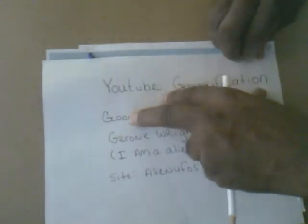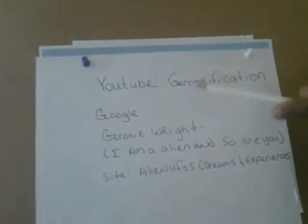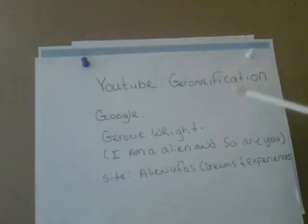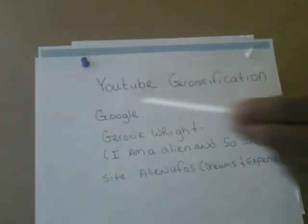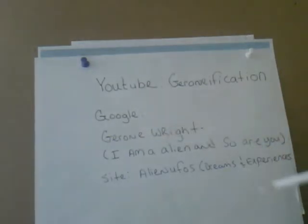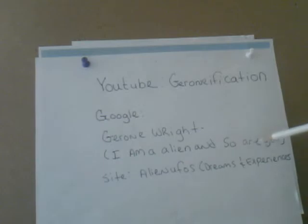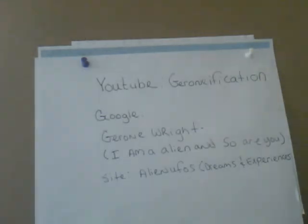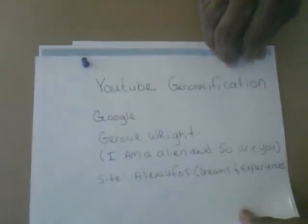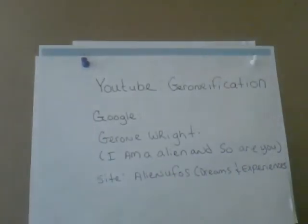You can find me here on YouTube under Geronification — that's G-E-R-O-N-E-I-F-I-C-A-T-I-O-N — or you can Google my name, Geron Wright, G-E-R-O-N-E-W-R-I-G-H-T. What will come up is a referencing site — I am an alien and so are you. All you have to do is click on either one of them and go to the last pages and you'll actually find me there. I'm on Alien UFOs, Dreams and Experiences — come and check my work out there. I have over three years of invested time and energy in it and I'm just now getting around to doing YouTube and Facebook.